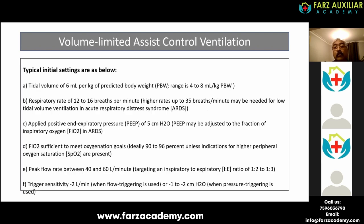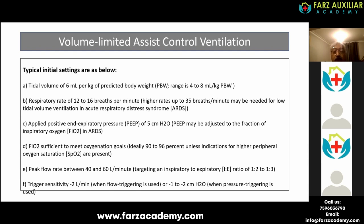When setting up a volume control or volume limited assist control ventilator, you need to set tidal volume at 6 ml per kg body weight — that is the usual thing — respiratory rate between 12 to 16. PEEP is normally kept around 5 cm of water, which is known as physiological PEEP. But in ARDS ventilation you have to increase the PEEP, sometimes up to 16 to 20. FiO2 should be set to meet oxygenation goals — saturation between 90 to 96% — and gradually reduced once lung condition improves.